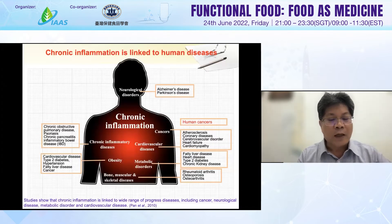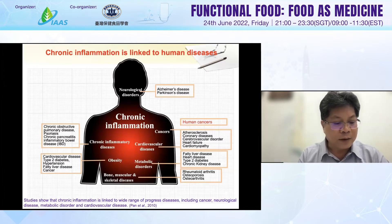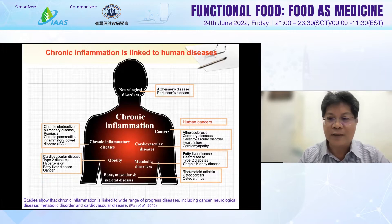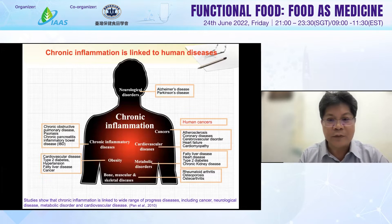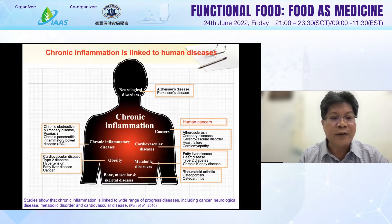This slide shows that studies show chronic inflammation is linked to a wide range of diseases including cancer, neurological disease, metabolic disorder, and cardiovascular disease. This is our article covering chronic inflammation-associated human diseases, including many inflammation-related diseases such as cardiovascular disease, type 2 diabetes.